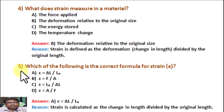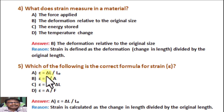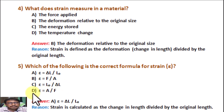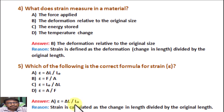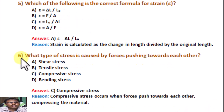Question number 5. Which of the following is the correct formula for strain eta? Option A: eta = ΔL / L₀. Option B: eta = F / A. Option C: eta = L₀ / ΔL. Option D: eta = A / F. Correct answer is A: eta = ΔL / L₀, where ΔL is the change in length and L₀ is the original length. Reason: Strain is calculated as the change in length divided by the original length.